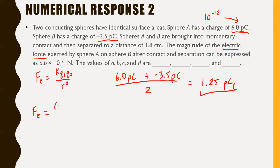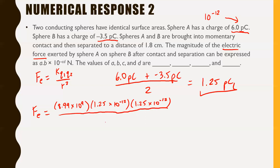Let's plug this into our Fe formula. Fe equals K, which is 8.99 times 10 to the 9, times Q1 — 1.25 times 10 to the negative 12 — times Q2, which is the same: 1.25 times 10 to the negative 12. You could write that as 1.25 times 10 to the negative 12, squared. This is all divided by R. R is 1.8 centimeters, which in meters is 0.018. Throw that in your calculator.